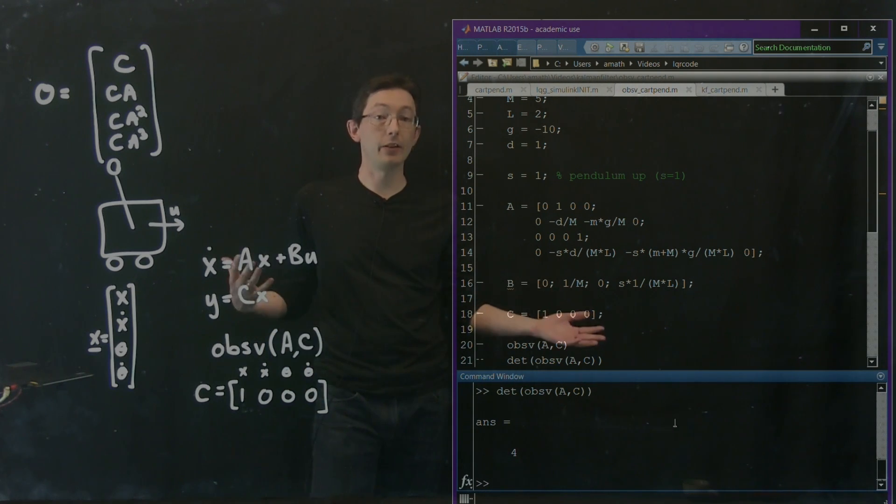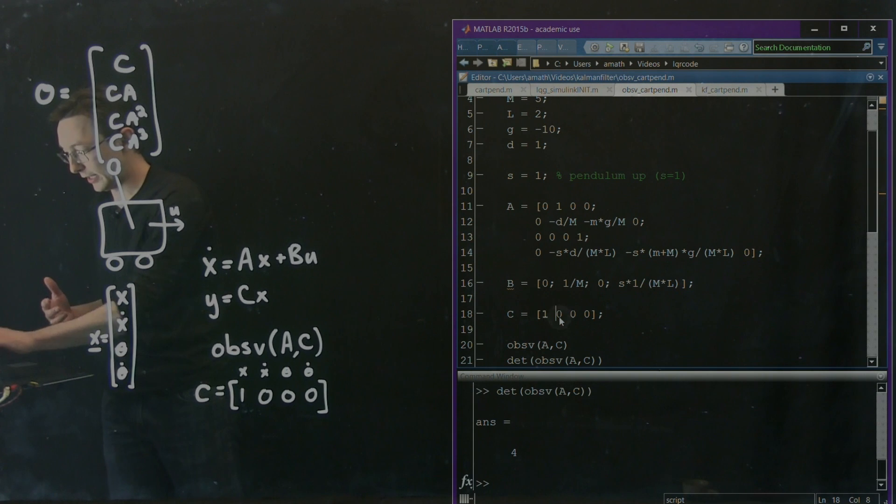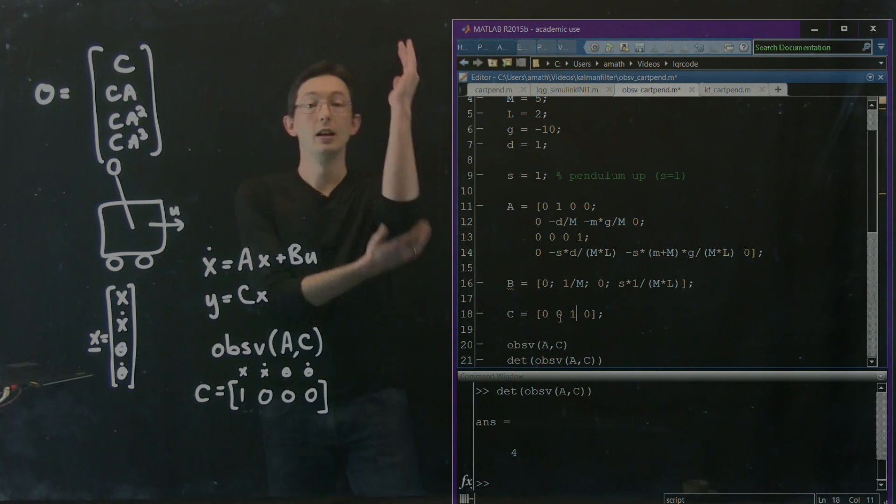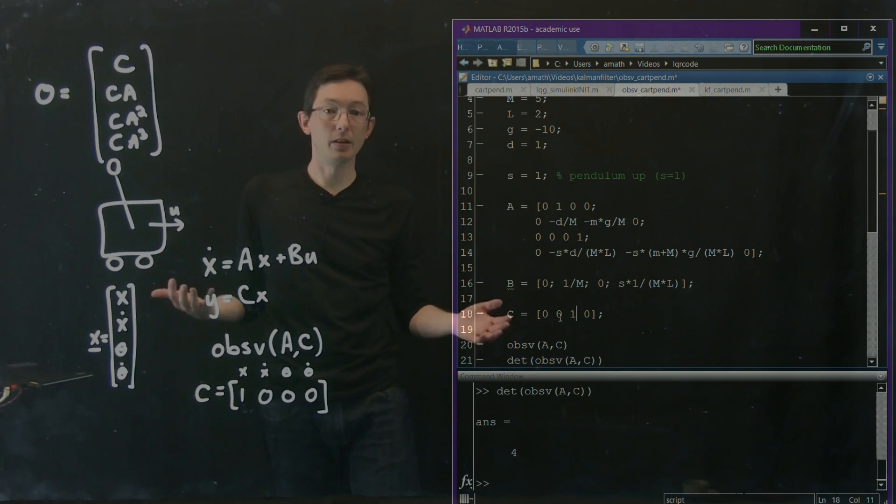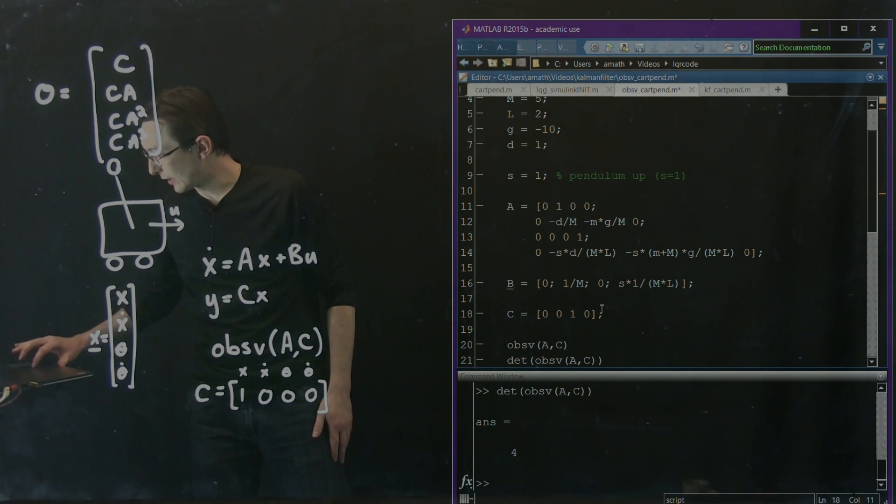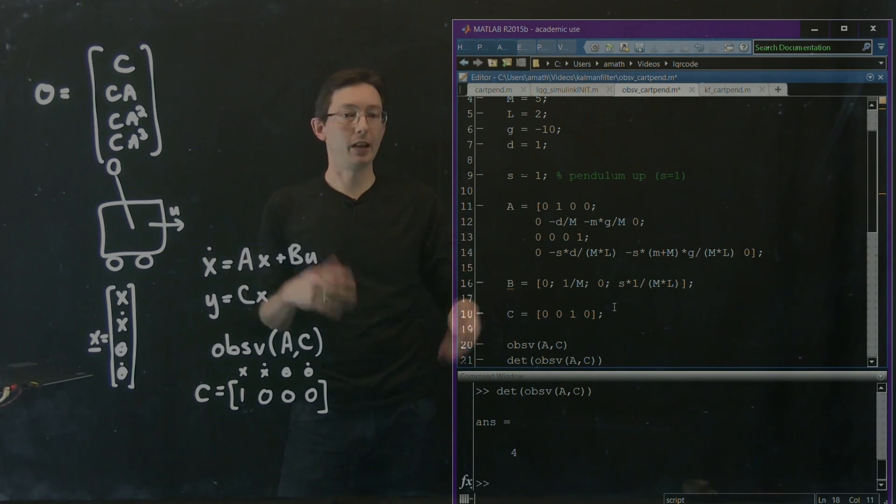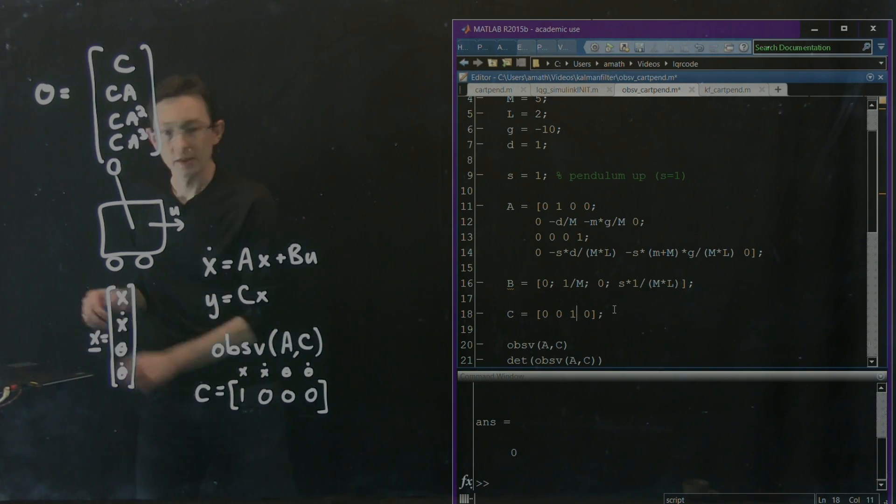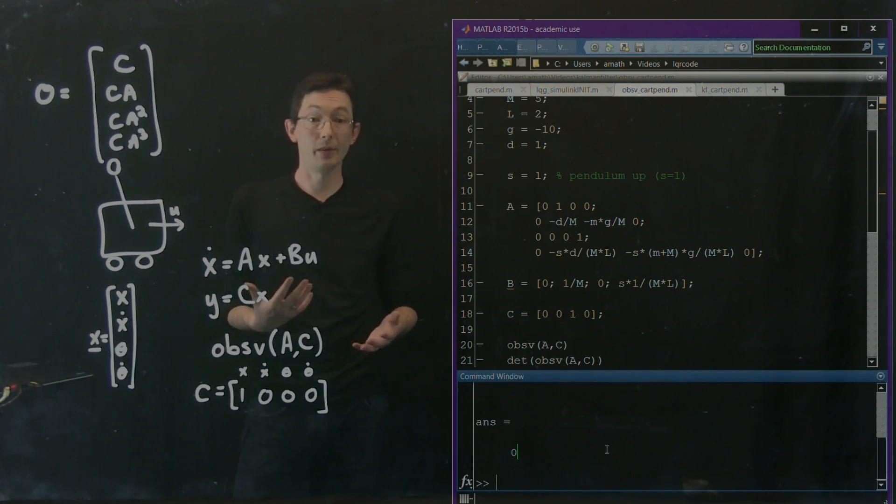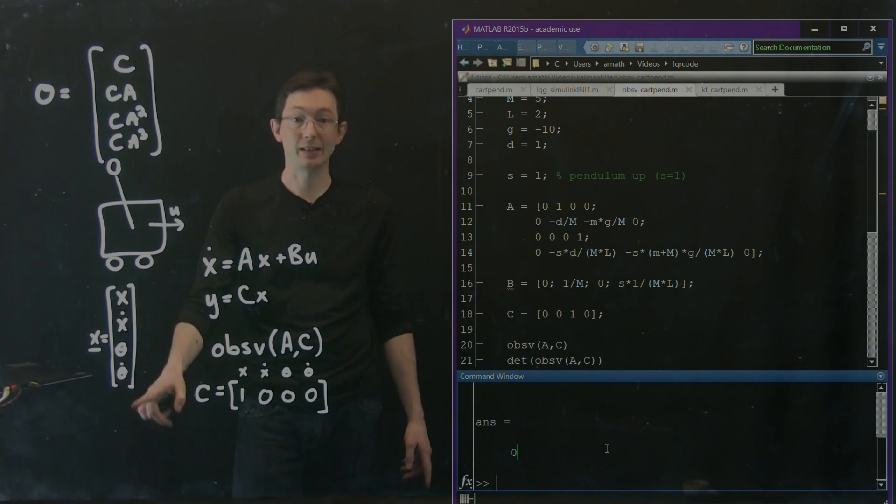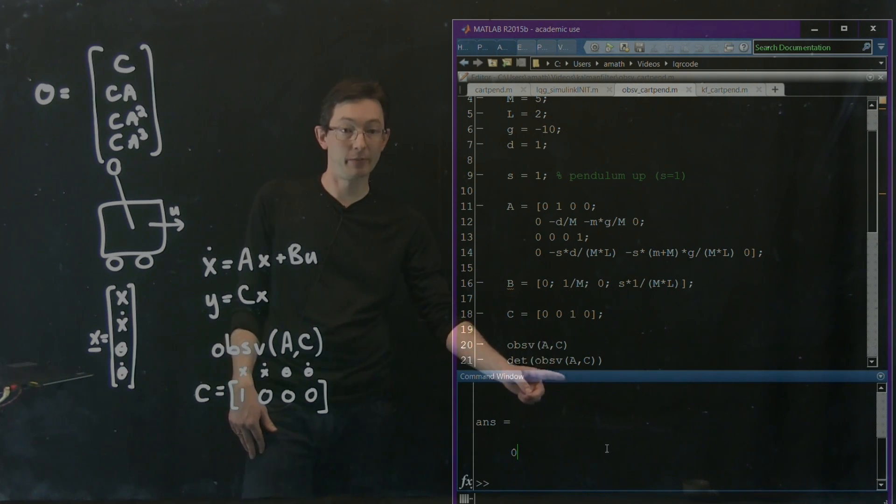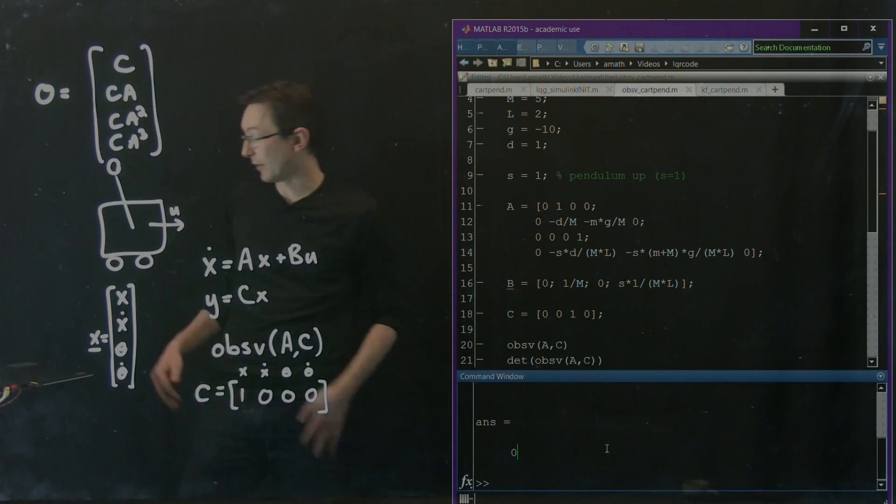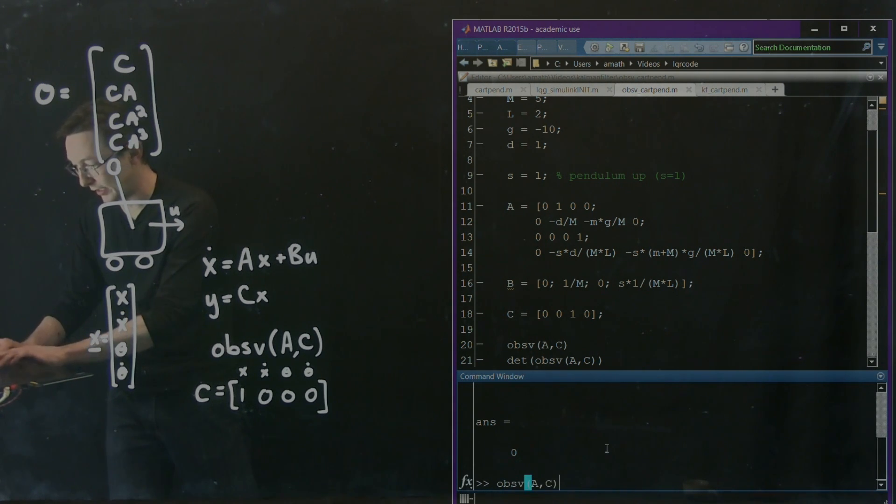Now let's see if some other measurements are also observable or not. Let's say instead of measuring X, I want to measure theta. So if I measure theta, is the system full state observable? If this was a live class, I'd ask you all to vote, but I'll just run it and see. Notice that my determinant is equal to zero. That means it's definitely not observable. So if I measure only theta of t, I can't estimate every other state in time because my determinant of my observability matrix is zero, meaning my observability matrix is not full rank.